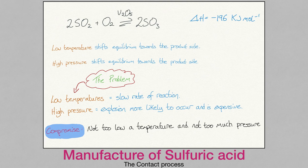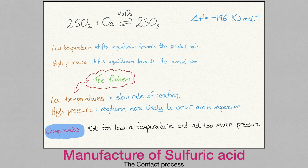Sulfuric acid is an extremely useful substance — it is used in producing fertilisers, cleaning detergents, plastics and batteries. The manufacture is done by the contact process. The name comes from having close contact between the reactants and the catalyst to form the product. Sulfur trioxide is formed and later dissolved to form sulfuric acid. The reaction is exothermic, therefore a low temperature would favour the product side. Likewise, a high pressure will drive the reaction towards the product side.